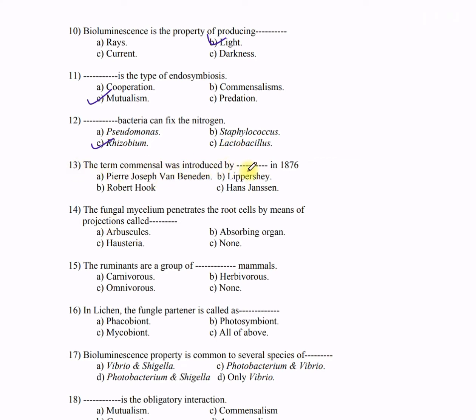Question 13: The term 'commensal' was introduced by dash in 1876 — A) Pierre Joseph van Beneden, B) Leperche, C) Robert Hooke, D) Hans Jensen. The correct answer is A — Pierre Joseph van Beneden. Commensalism is a biological interaction in which one species gains benefits while the other is neither benefited nor harmed.